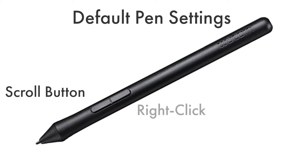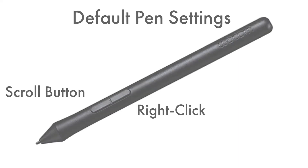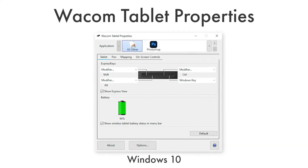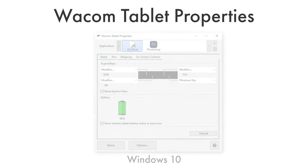The second button on the pen behaves as a right click with a mouse. To adjust settings or preferences on how the pen and tablet behave, open the Wacom Tablet Properties application.